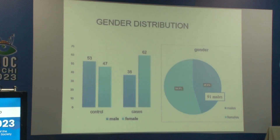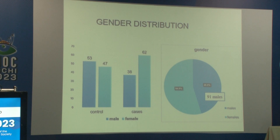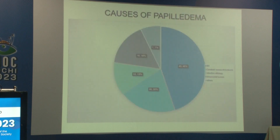In my study, 54.5% were female and 45.5% were male. Among 100 cases, there were 62 females and 38 males; controls included 53 females and 47 males. The majority of cases had idiopathic intracranial hypertension, explaining the female preponderance. Other causes included cerebral venous thrombosis, infectious etiology, and tumors.